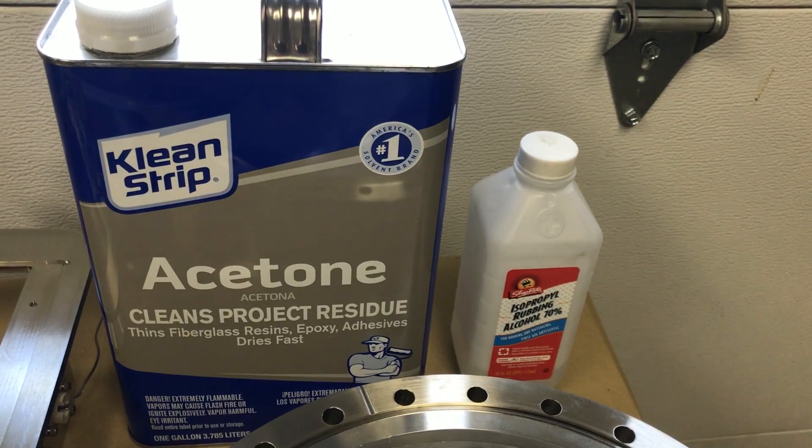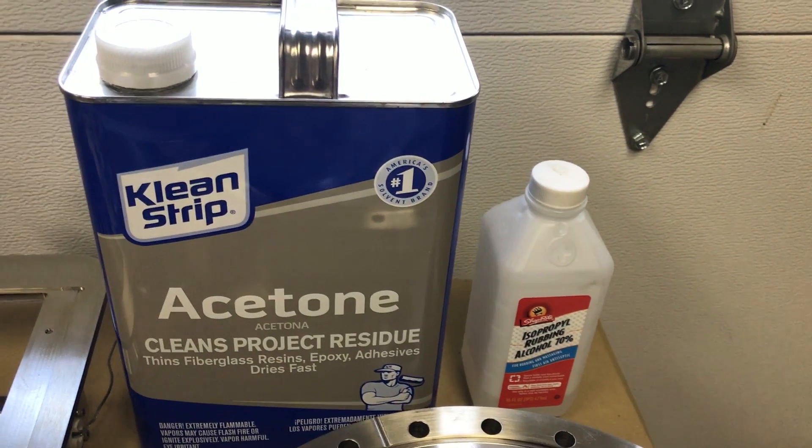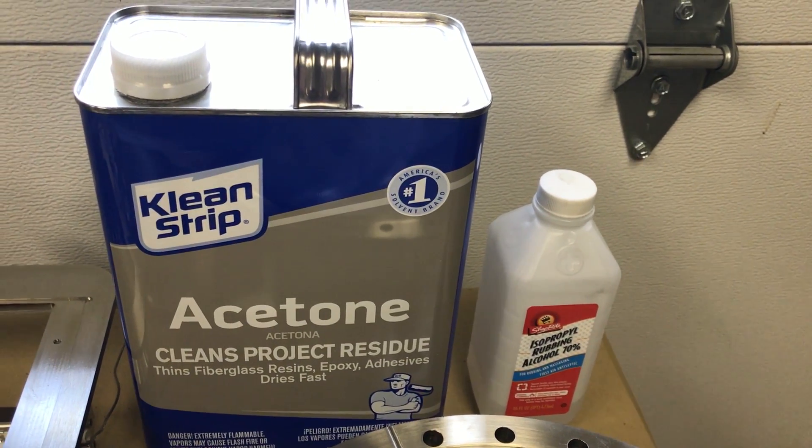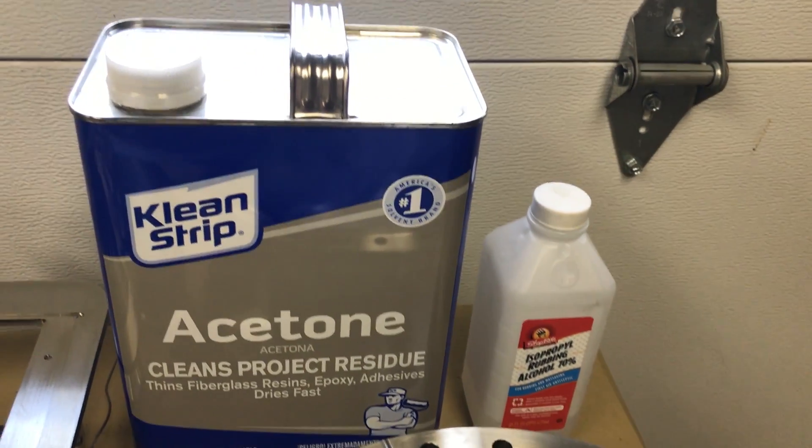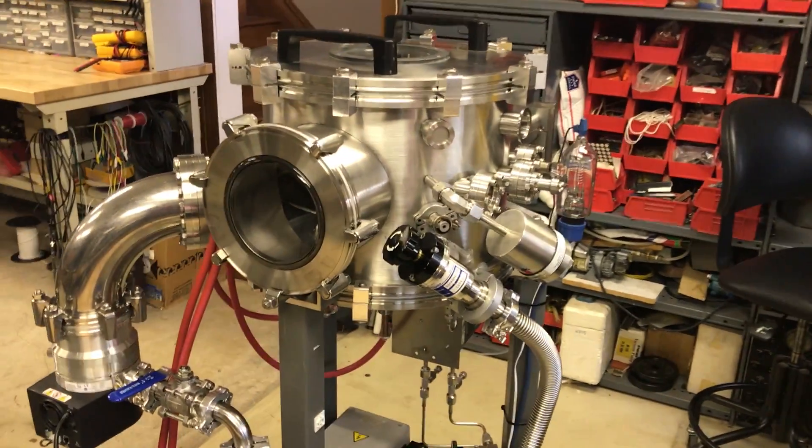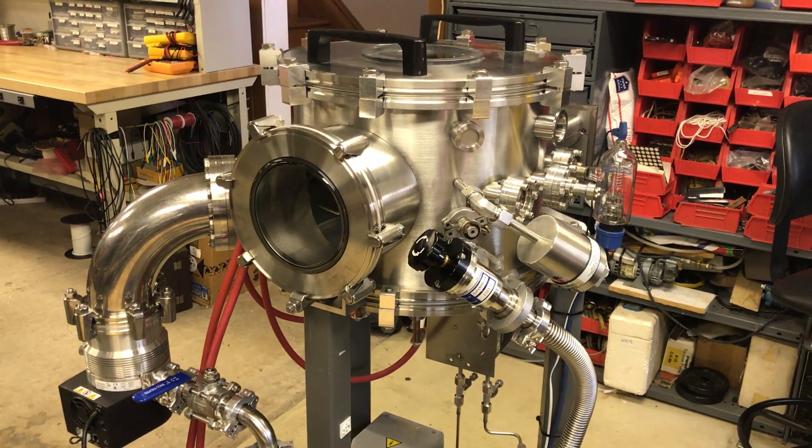You should stay away from drugstore brand IPA. You should actually get real lab brand strong 90 to 99% isopropyl if possible. And once you do those wipe downs, you don't want to put any more fingerprints or contamination onto any of the vacuum surfaces.